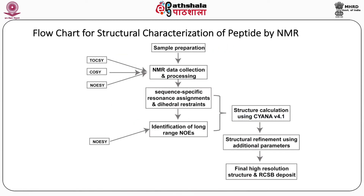Let us now look at a flow chart for structural characterization of peptide by NMR showing the various steps. First, the sample is prepared and then NMR data collection and processing is done. The various experiments collected are COSY, TOCSY and NOESY. Then one does sequence-specific resonance assignments and dihedral restraints, and also identification of long-range NOEs from the NOESY experiment. The dihedral and distance-restraint information is put into a structural calculation program, usually CYANA, and structural refinement using additional parameters is carried out. Final high-resolution structures are deposited in the protein data bank.